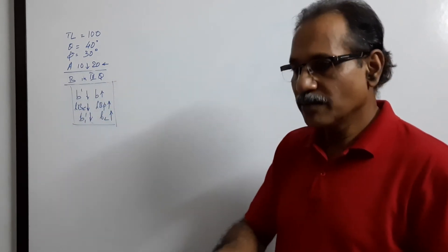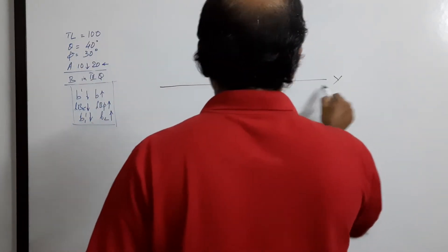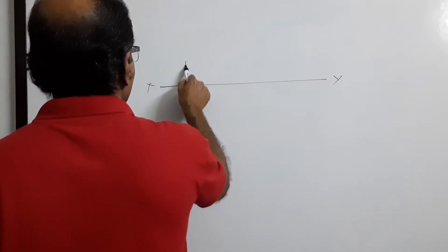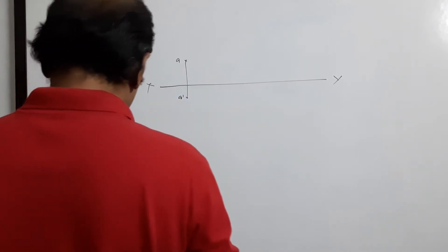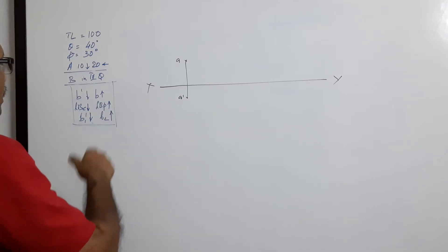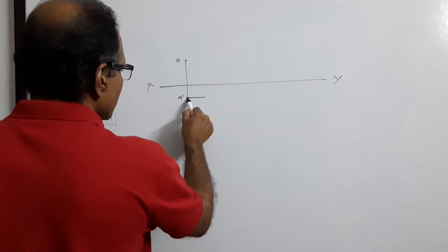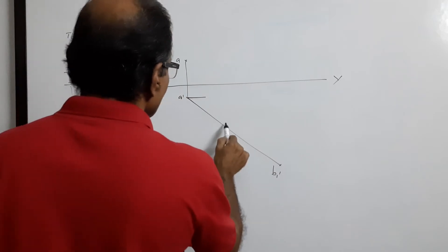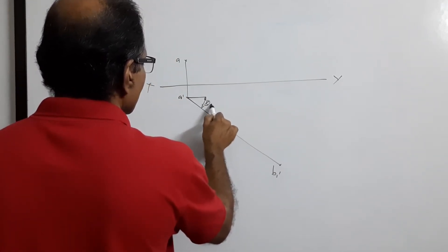b2 is above. Draw XYZ. With a-dash and a as center, draw a line at 40 degrees downwards — b1-dash is to be drawn downward. Length 100, theta equals 40.